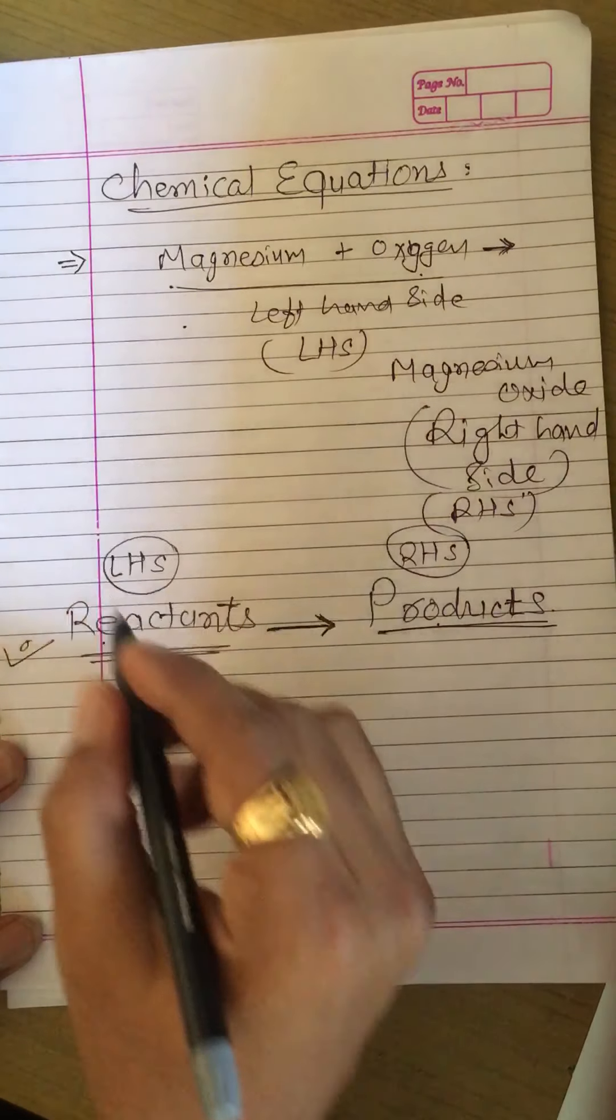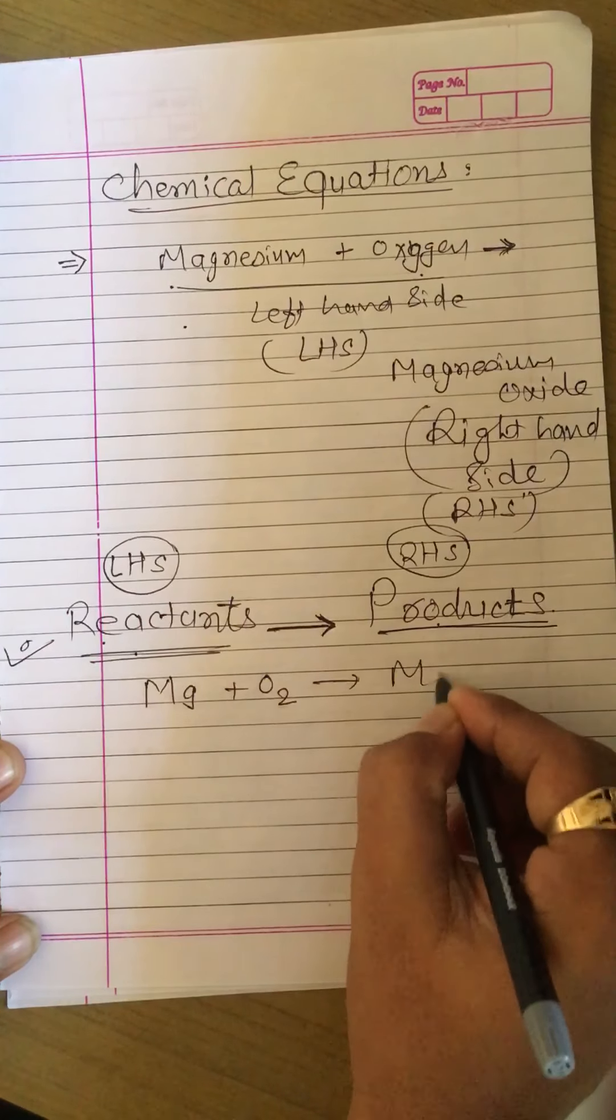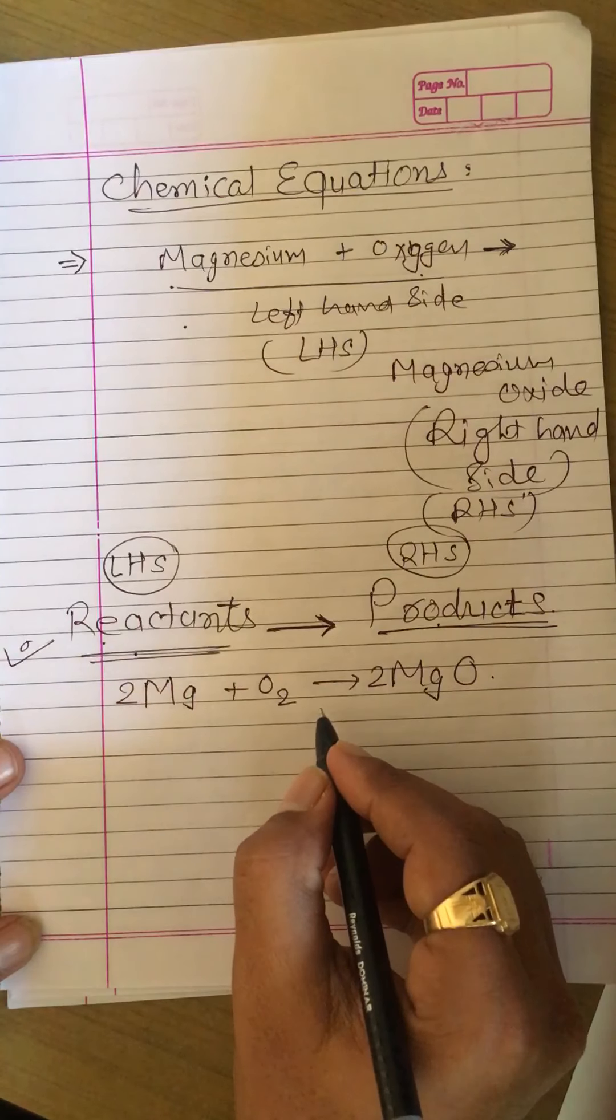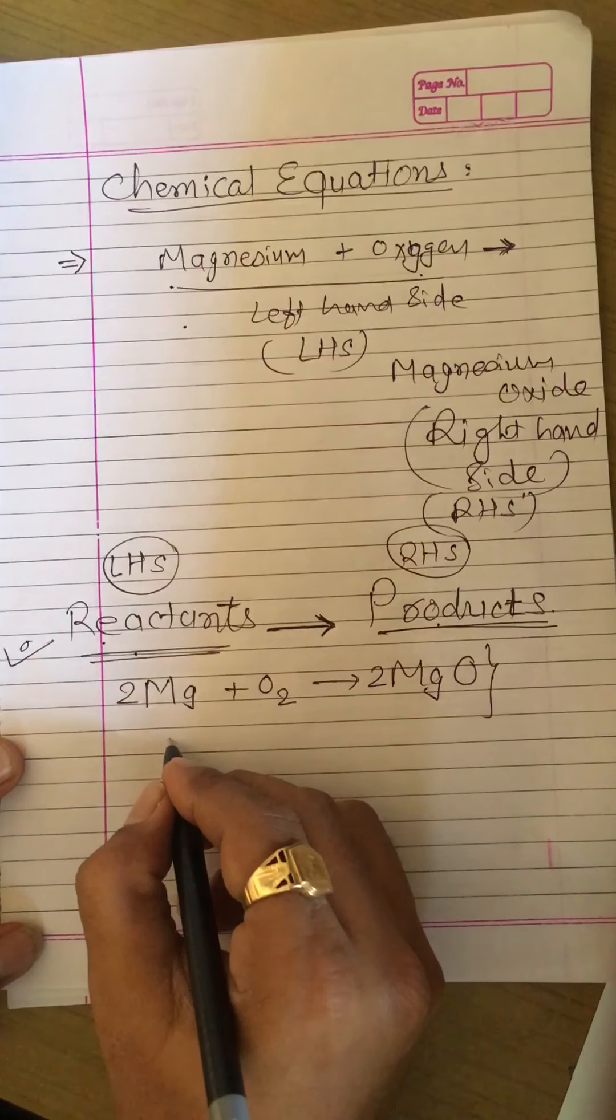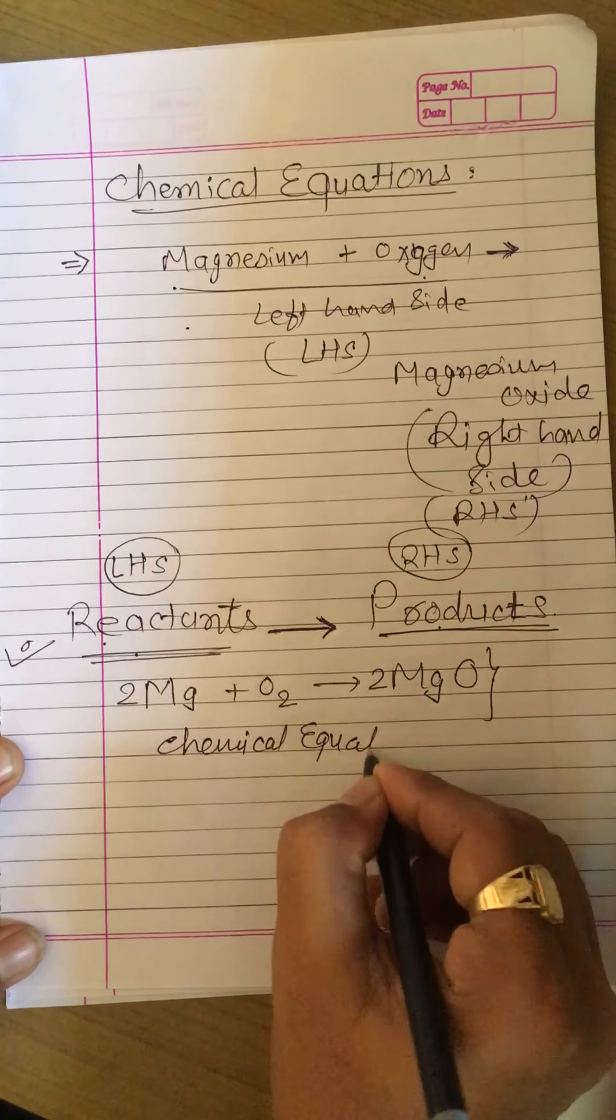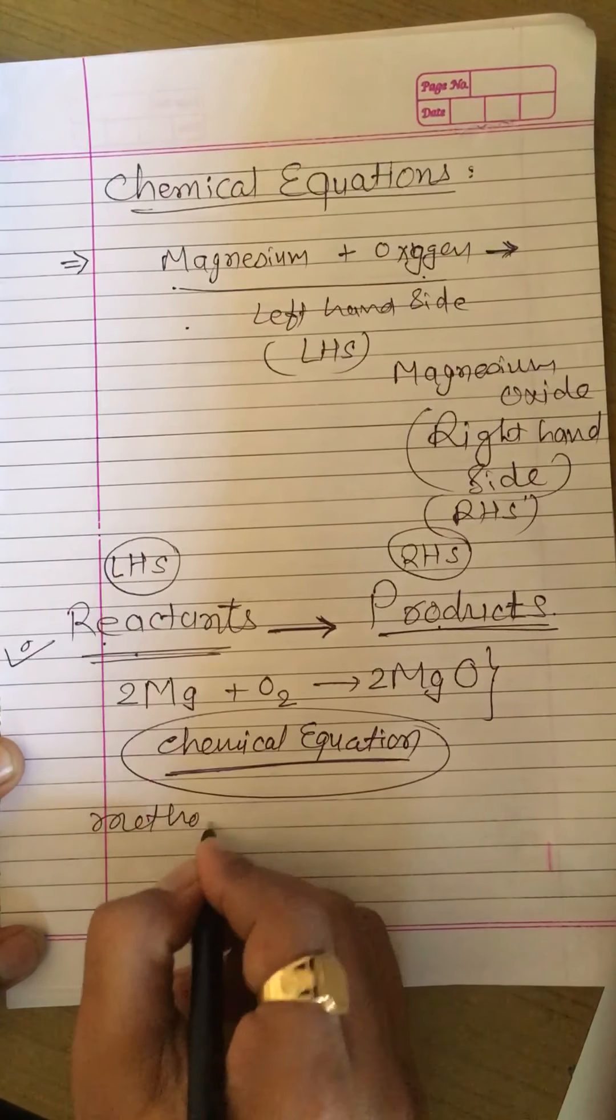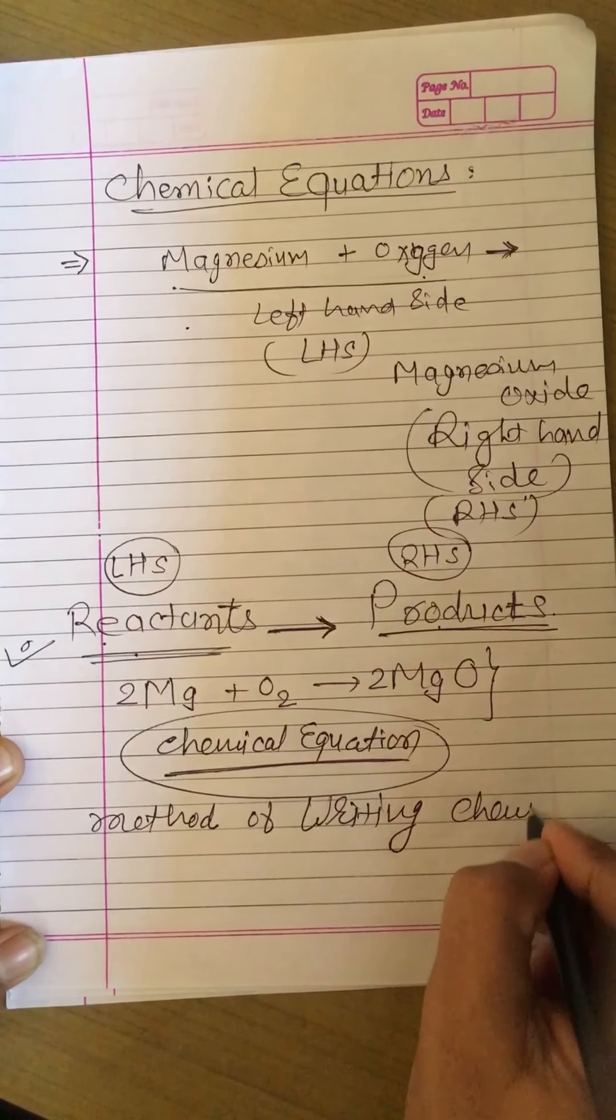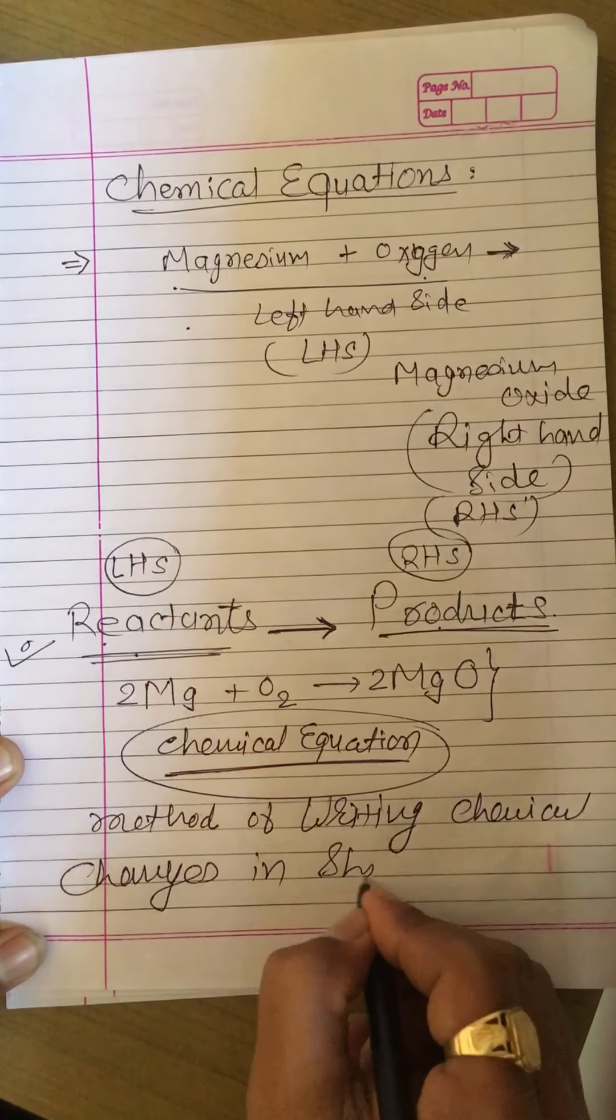Suppose friends, one reaction: magnesium plus oxygen gives magnesium oxide. So this is the reaction written in a shorter form and this is the method of writing a chemical equation. Chemical equation is a method of writing chemical changes in short form.